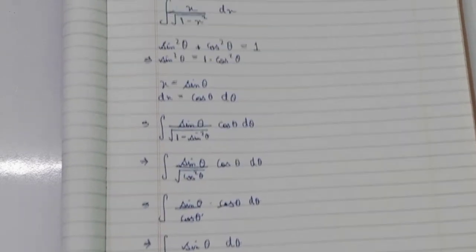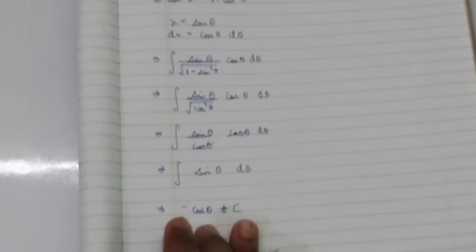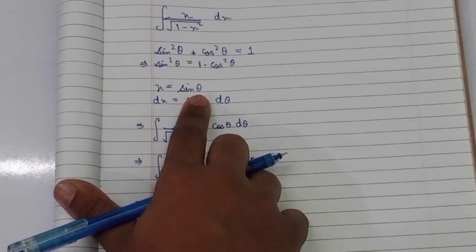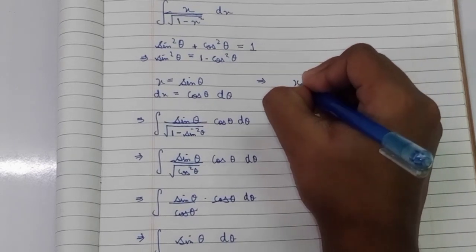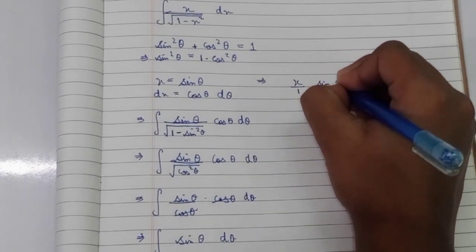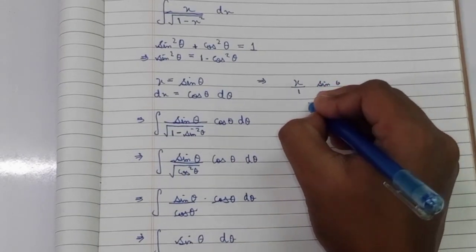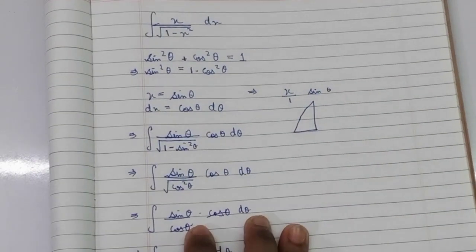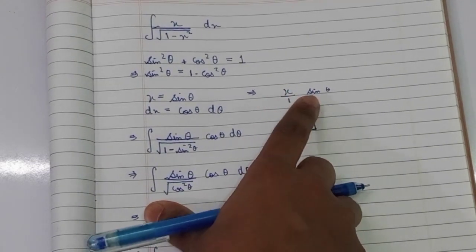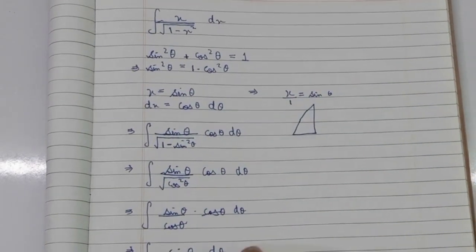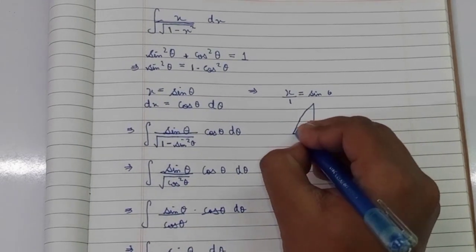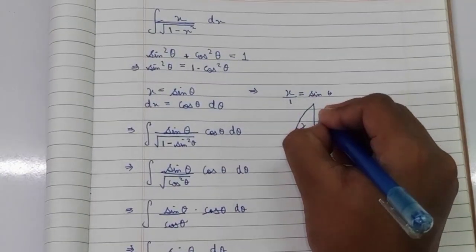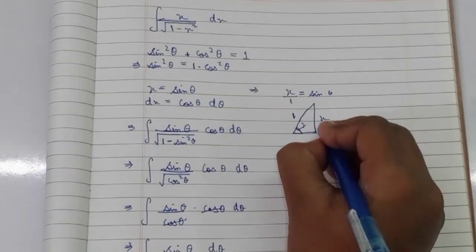Since our result is in theta but the original question is in x, we need to convert back. We know x equals sine theta, which means x over 1 equals sine theta — that is opposite over hypotenuse. Drawing a right-angle triangle, the opposite side is x and the hypotenuse is 1.